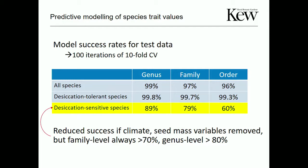Pulling out variables from the test set to see performance with minimal information: for genus and family level models, knowing only the species name still gave about 80% and 70% accuracy respectively. For the order-level model, you need those other variables — seed mass gives about 50%, and without it the predictions fall apart.